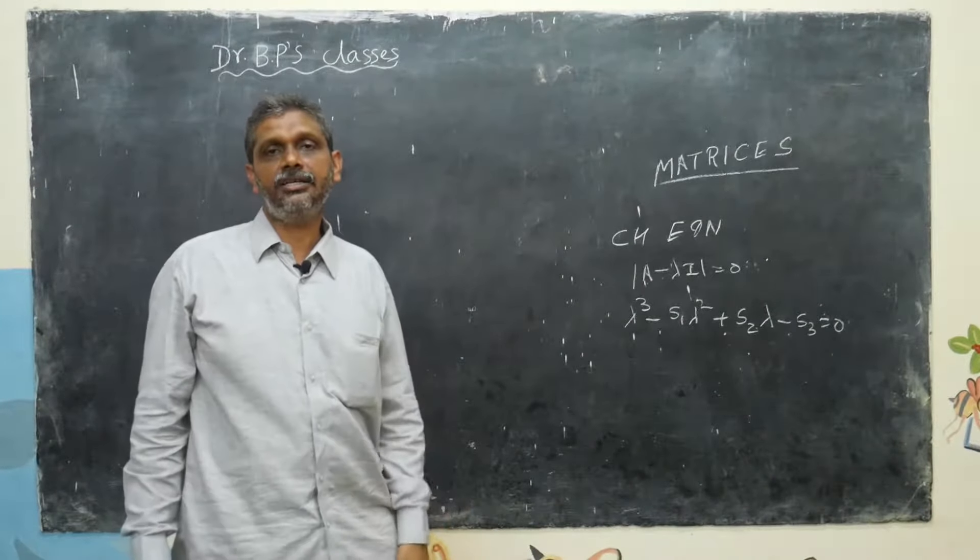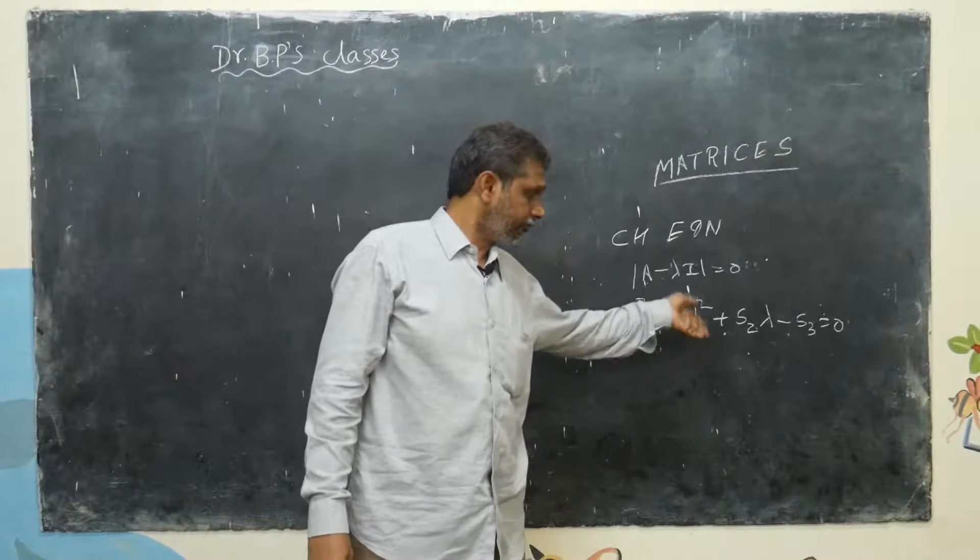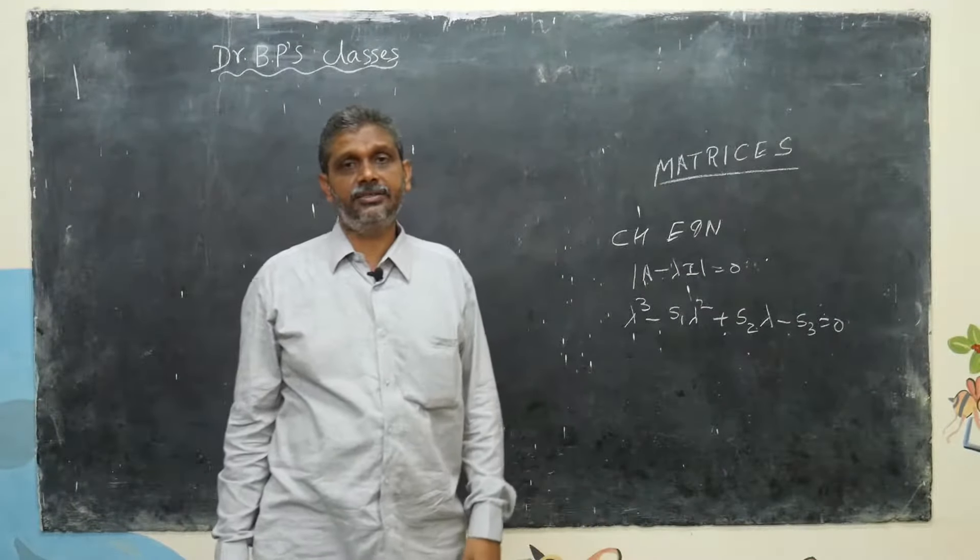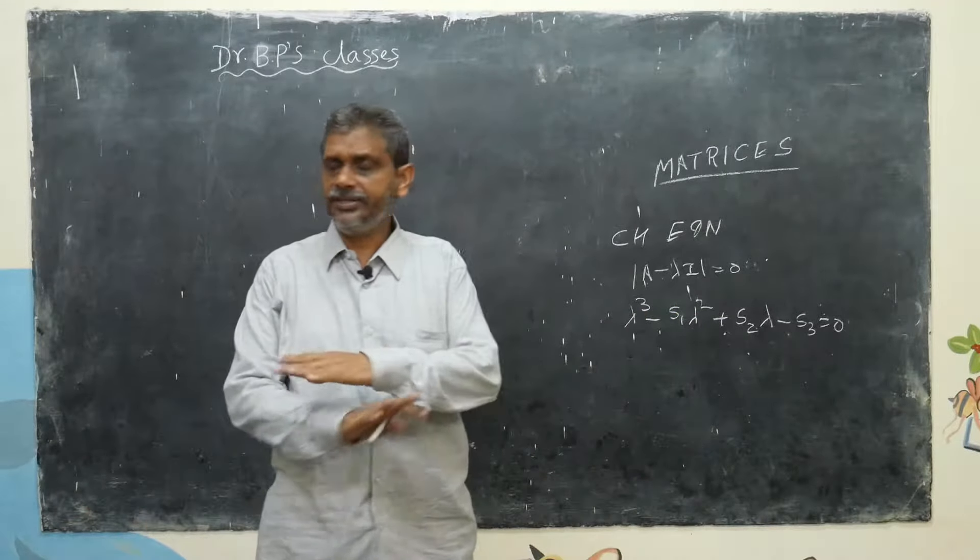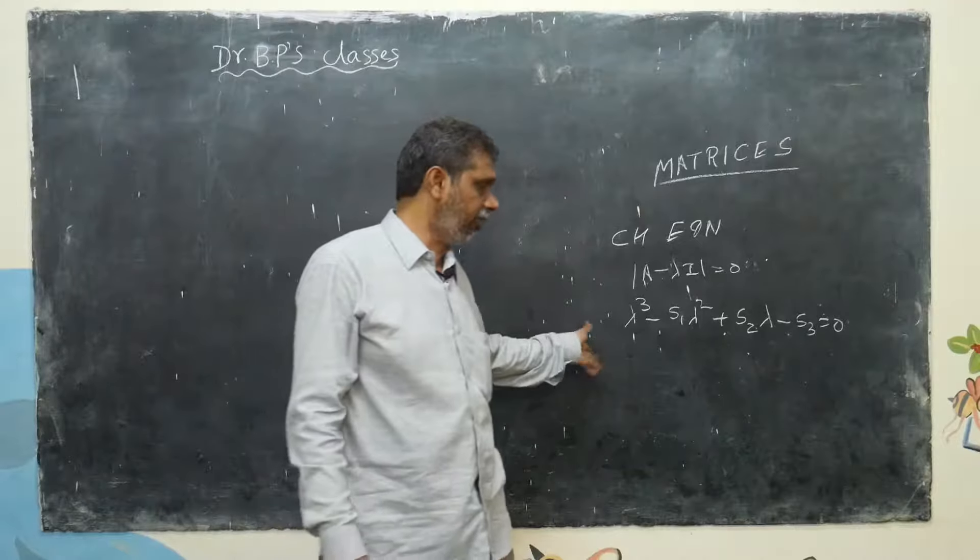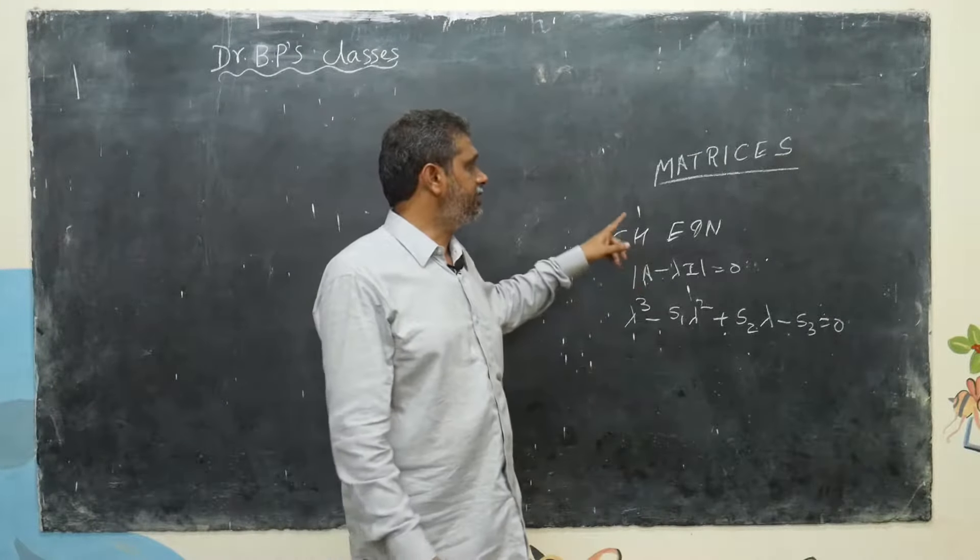Then who is S1? Trace, sum of the diagonal elements. S2 is what? Sum of the minors of the diagonal elements. S3 is what? Determinant. You don't see any problem. I am not seeing any problem. For this, I don't get marks, but it's the skeleton of the subject. First is matrices.